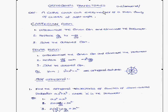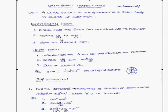If any curve cuts another family of curves at right angles, then these two curves are said to be orthogonal to each other. In Cartesian form, here is how we solve this type of problem. First step: differentiate the given equation and eliminate the parameter. Second step: replace dy/dx with minus dx/dy. If you multiply, you get the product of slopes equal to minus 1 for orthogonality. Third step: solve the obtained equation.